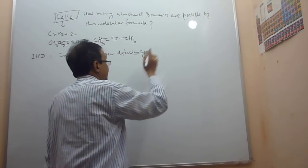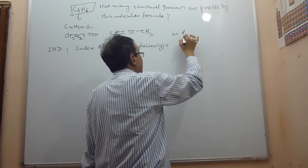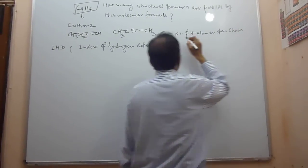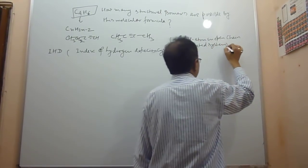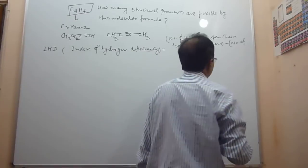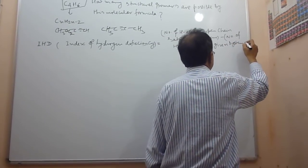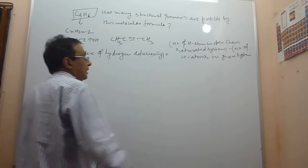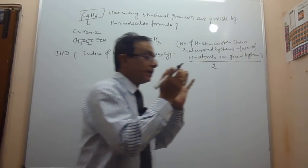What is the formula for IHD? IHD equals the number of H atoms in the open-chain saturated system, minus the number of H atoms in the given system, divided by two.